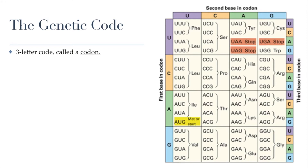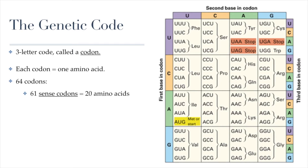Each codon usually represents one amino acid. We have four possible letters in the genetic code: in RNA, those are A, G, C, and U. These can be arranged into three-letter codons, giving 64 different combinations. Since there are only 20 amino acids, 61 of those 64 codons code for the 20 amino acids — some amino acids have up to four different codons representing them. That leaves three other codons called stop codons, also called nonsense or termination codons.